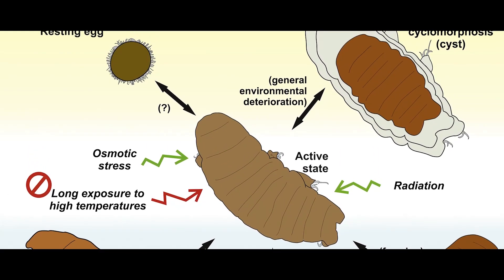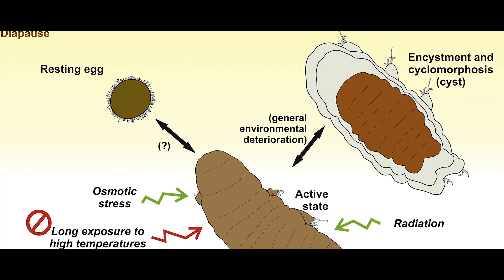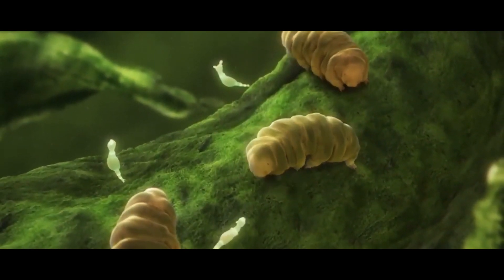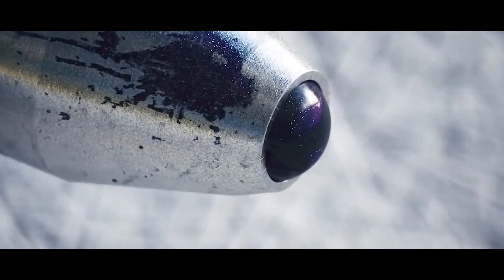When tardigrades encounter extreme conditions, they hibernate by shriveling up into a cocoon. This state is called the tun state, and when in this state all of their body processes are shut down. This is why they were chosen for this quantum experiment, as quantum computers need extremely low temperatures to work. Quantum entanglement is a weird quirk of existing on the quantum level. It occurs when two things become linked in a way that makes the two things inseparable. They cannot be described separately and exist as one thing. These things are usually particles like electrons.